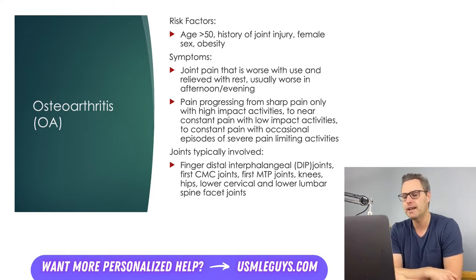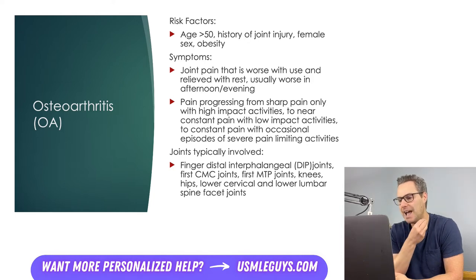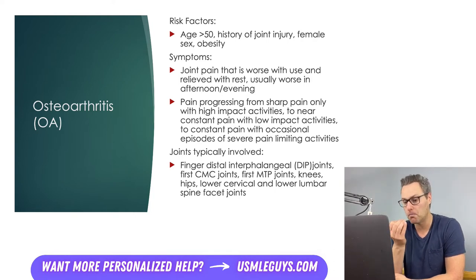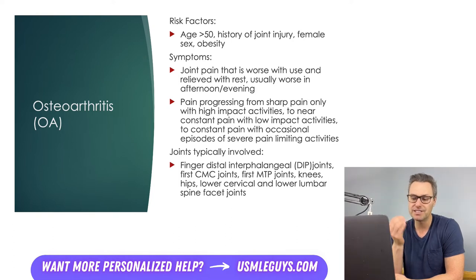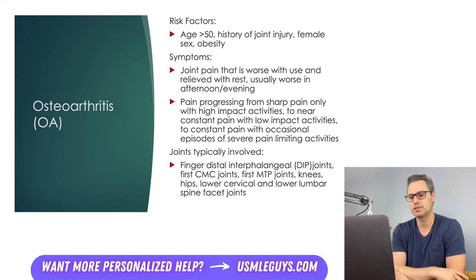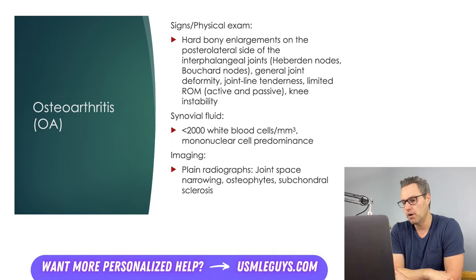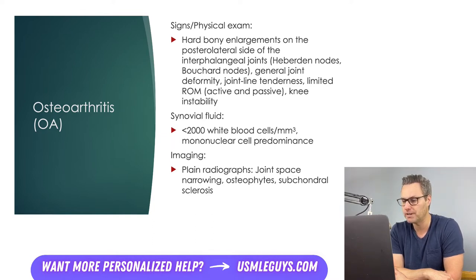The joints most commonly involved in OA include the distal interphalangeal (DIP) joints of the finger, the first CMC joints, the first MTP joints, the knees, hips, and the lower cervical and lower lumbar spine facet joints. Other joints can be involved, though less commonly — if seen, a more rigorous workup should be done. When it comes to symptoms, the hands have hard bony enlargements on the posterior lateral side of the interphalangeal joints, known as Heberden nodes at the DIP joints and Bouchard nodes at the PIP joints.